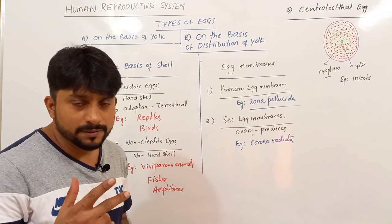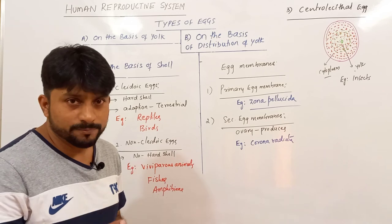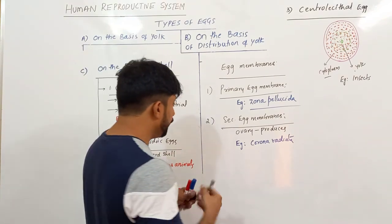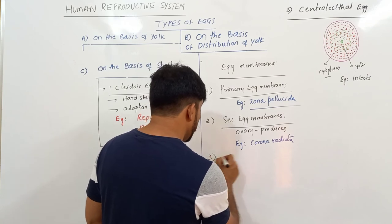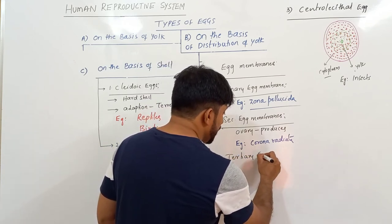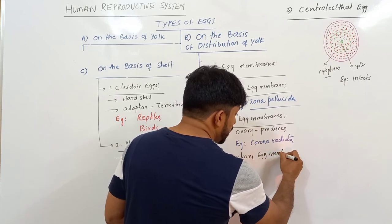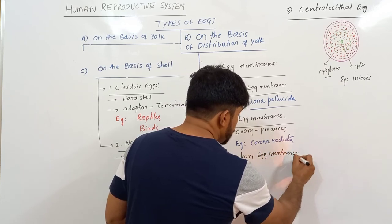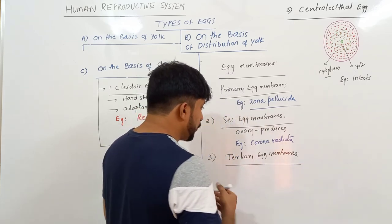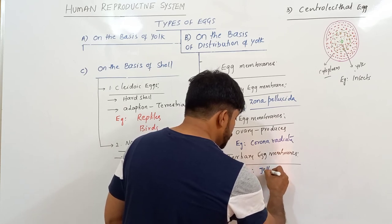Other than the ovary or ovum, if the uterus or oviduct forms membranes, we call them tertiary membranes. The tertiary egg membranes generally include jelly coat and shell.